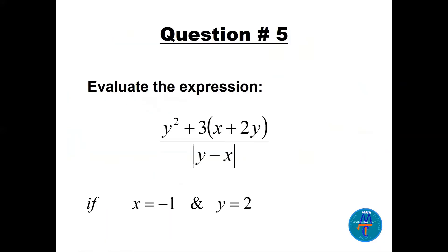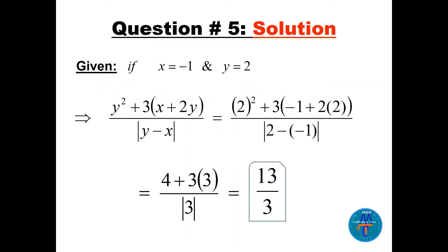Question 5: substitute x = −1 and y = 2 into the expression with y² + 3 in the numerator bracket (x + 2y) and |y − x| in the denominator. With x = −1 and y = 2: numerator is 4 + 3(−1 + 4) = 4 + 9 = 13; denominator is |2 − (−1)| = |3| = 3. The answer is 13/3.